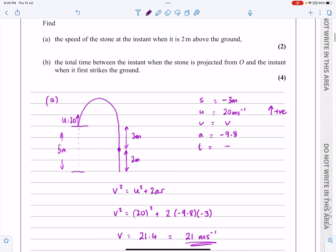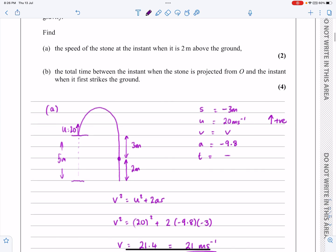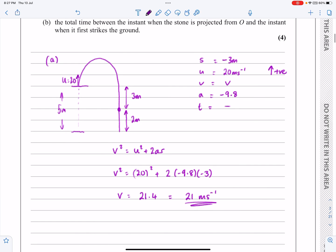Part B says find the total time between the instant when it's projected and the instant when it first touches the ground. Okay, so what that now means is that my journey becomes that this time.